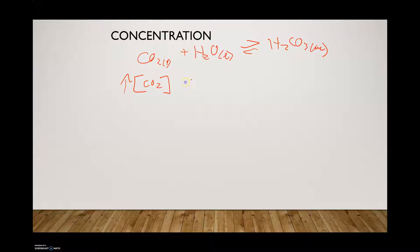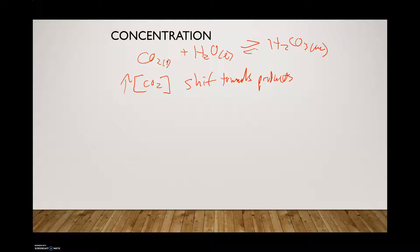As a result, it's going to shift towards the products to reduce that stress. An equilibrium is a position where the concentrations are remaining constant. Once you add in a species and offset that balance, the equilibrium has to reposition itself. It shifts to the right to produce more carbonic acid and lower the amount of CO2 that was introduced into the system.